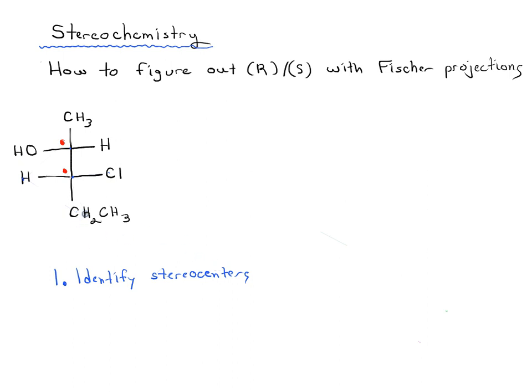CH2 is not a stereocenter - it's got two identical hydrogens. CH3 is not a stereocenter either, it's got three identical hydrogens. So we know where our stereocenters are. Then the second part, when you're dealing with a Fischer, is to maybe draw out in 3D.